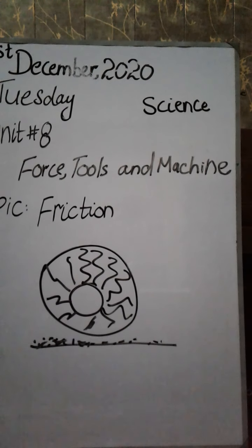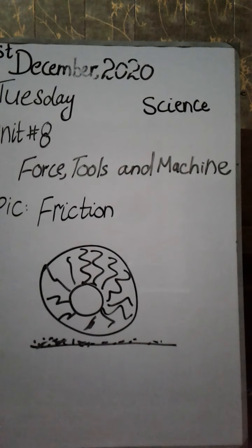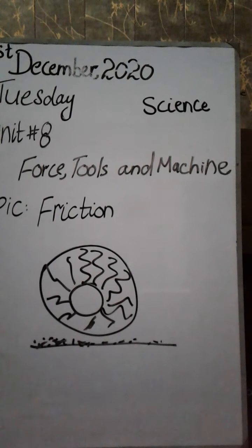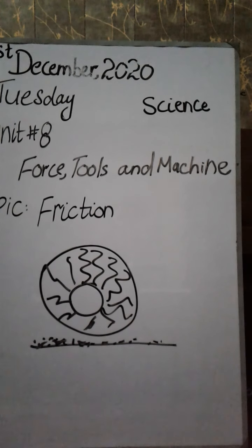Yes, you are very right. Friction is the force that is produced by rubbing two objects together — when objects rub, the force produced is friction. Good. Can anybody tell me what could be the examples of friction in our daily life? While you are ironing the cloth, that's friction. While rubbing your hands, that's also friction.